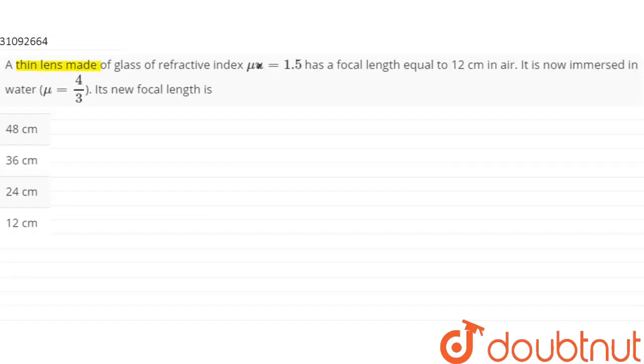The question is: a thin lens made up of glass of refractive index mu = 1.5 and focal length equal to 12 cm in air. It is now immersed in water, mu = 4/3, and the new focal length is?